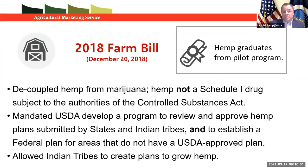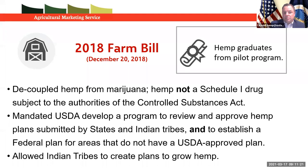Fast forward to the 2018 Farm Bill, passed in December of 2018. This action decoupled hemp from marijuana and formally established that hemp is not a Schedule 1 drug, removing it from the Controlled Substances Act. The bill also required that USDA develop a program to review and approve hemp plans submitted by states and Indian tribes, and also establish a USDA oversight program for individuals in states or tribal territories that did not want to administer their own independent programs.